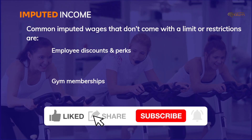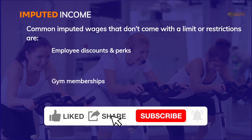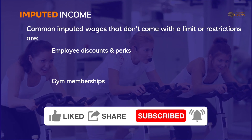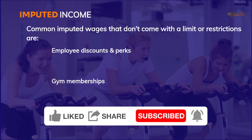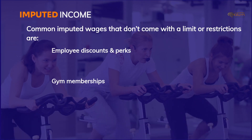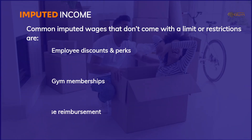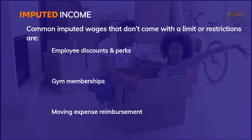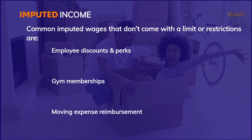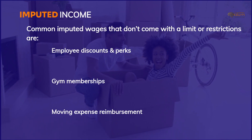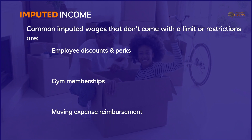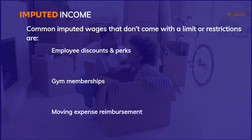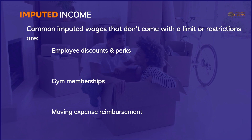Gym memberships: many big companies offer gym memberships to help foster employee health, and these memberships fall into the category of imputed income. Moving expense reimbursement: if you move for a job, you likely tally the expenses incurred along the way — moving van rental, relocation costs, realtor fees, and other moving expenses.